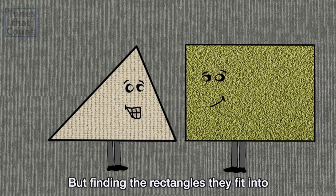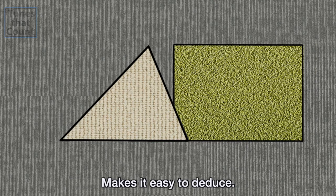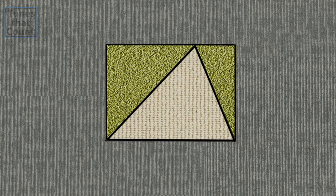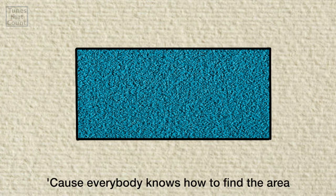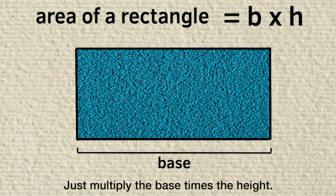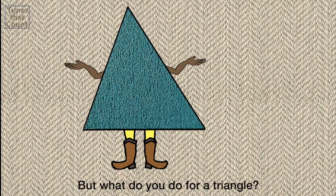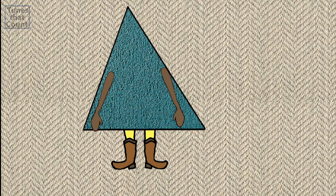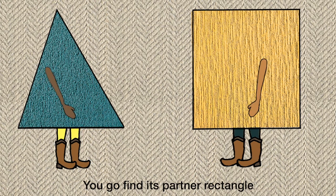But finding the rectangles they fit into makes it easy to deduce. Cause everybody knows how to find the area of a rectangle. Just multiply the base times the height. But what do you do for a triangle? You go find its partner rectangle that shares its base and height.